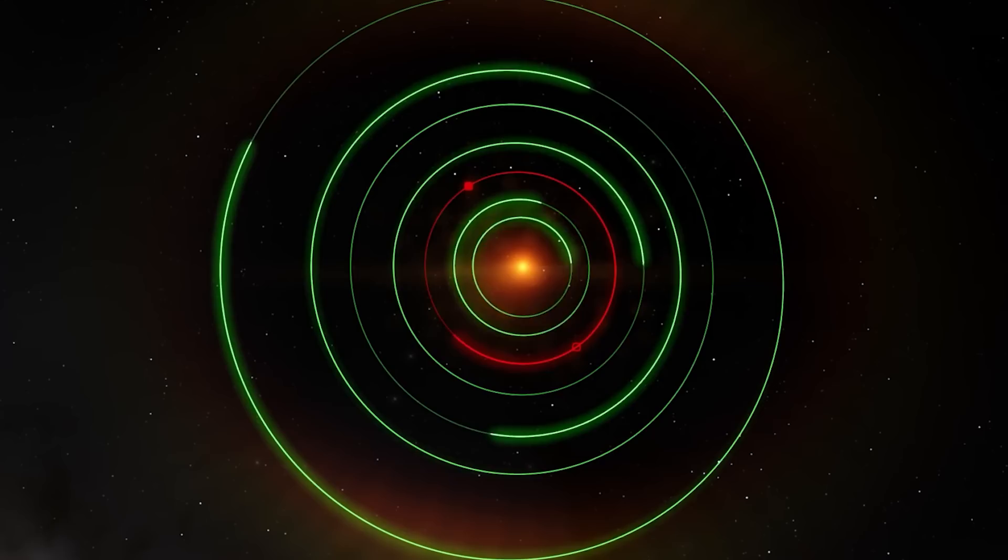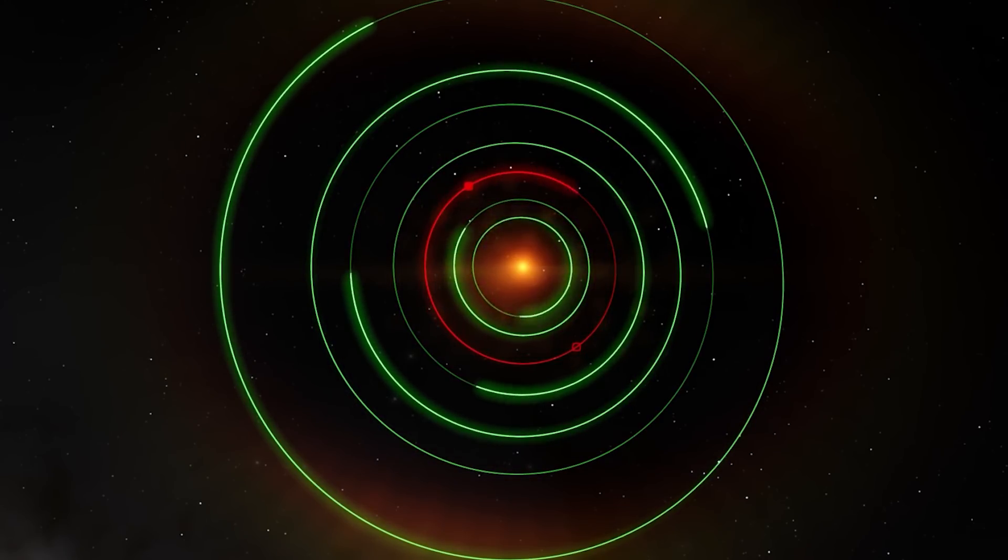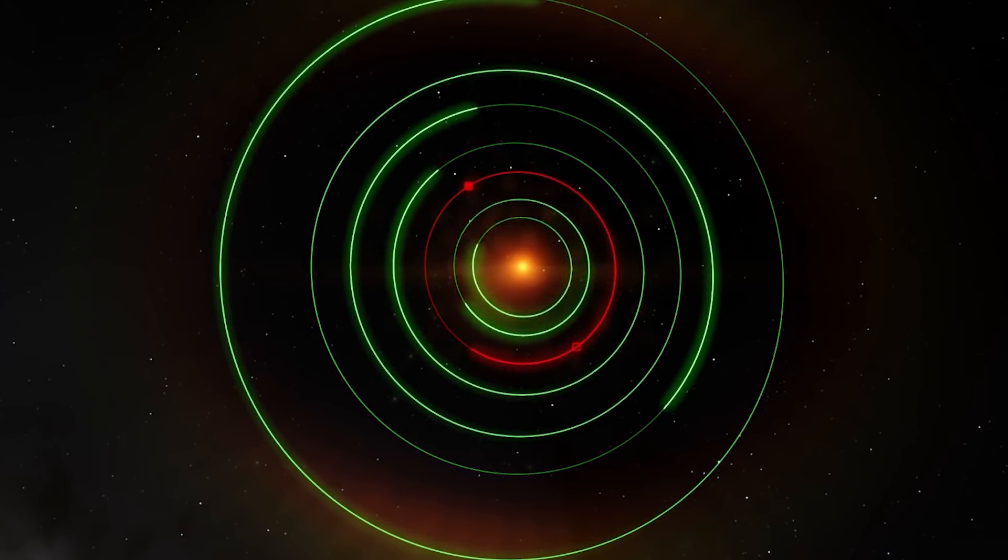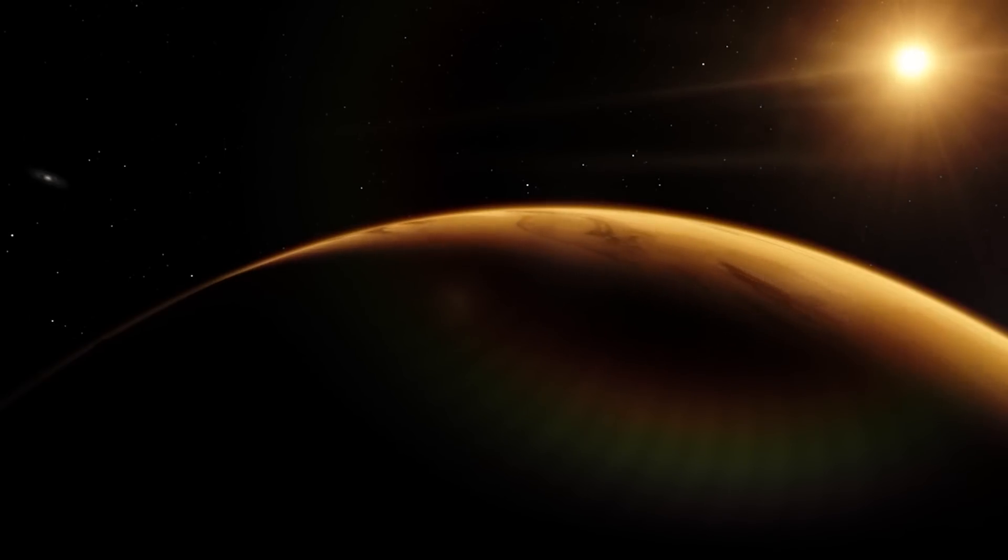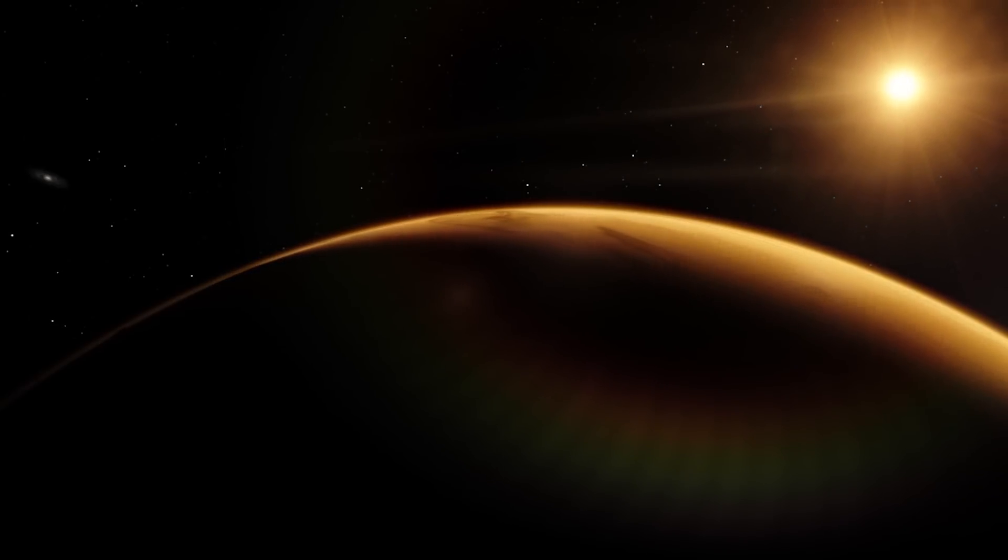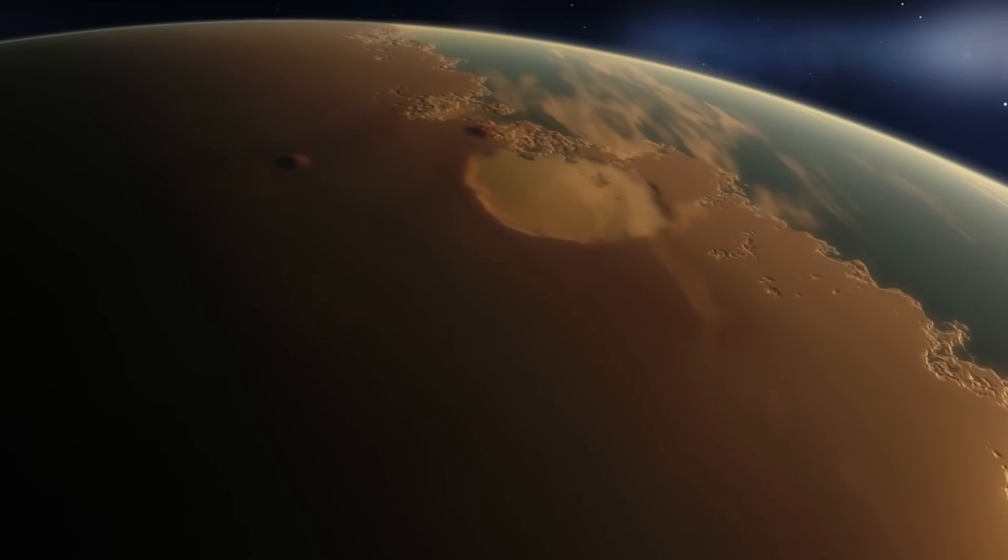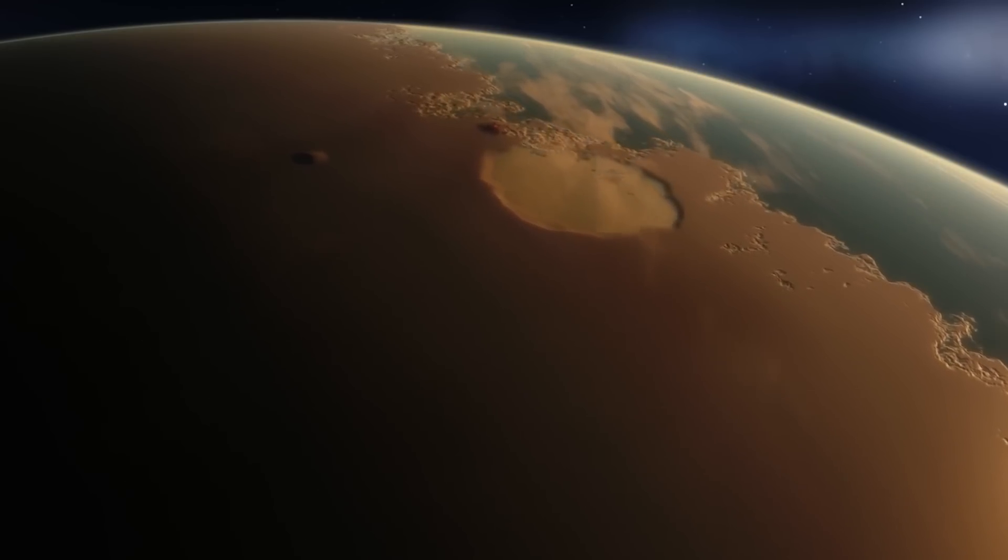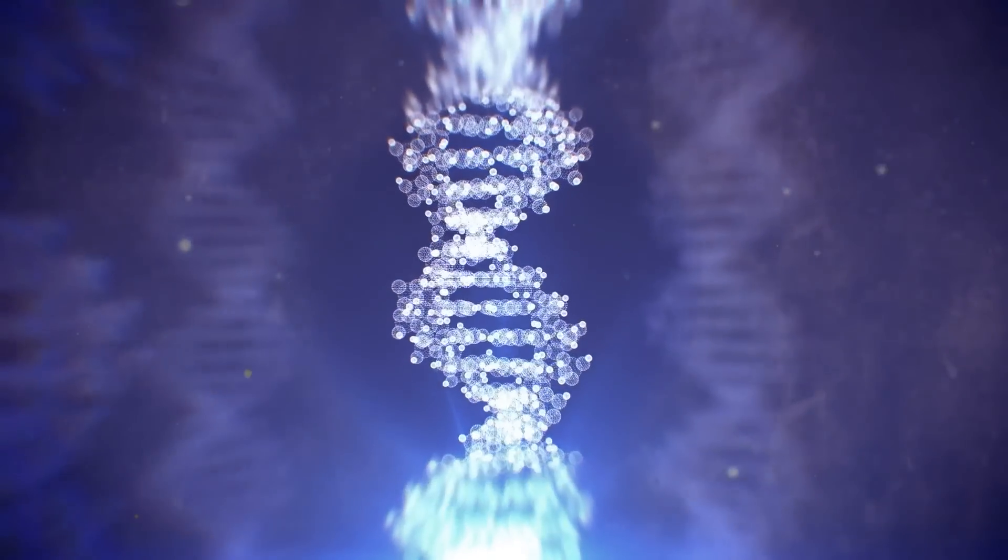The James Webb Space Telescope will also explore the TRAPPIST-1 system during its initial cycle of research projects. The goal of the research is to determine if the planets in the TRAPPIST-1 system have atmospheres, and in the long run to establish a method for searching for biosignatures that might indicate the presence of life on any of the planets.